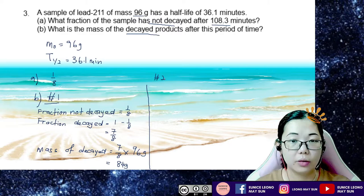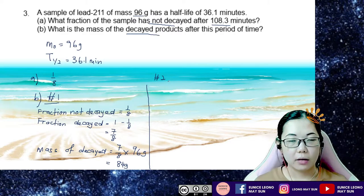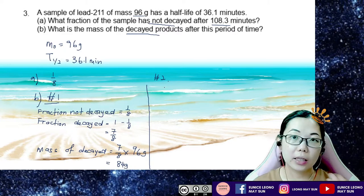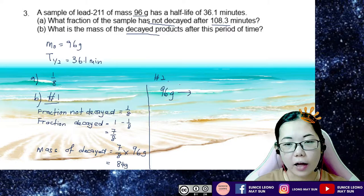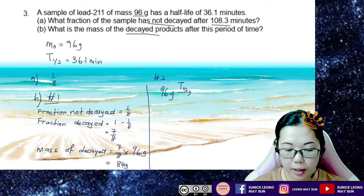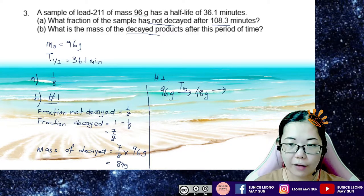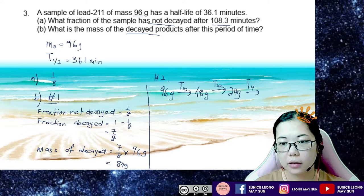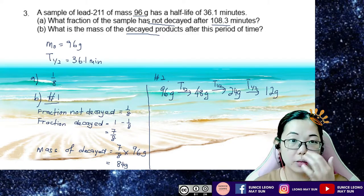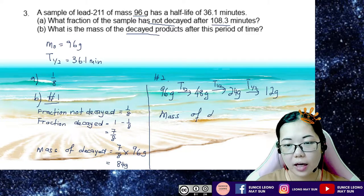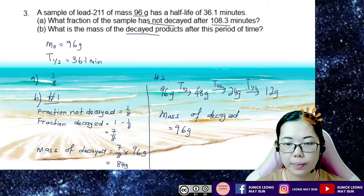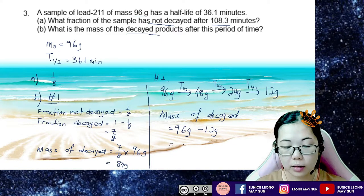For Method 2, since we know from part A that 3 half-lives have elapsed, I use the decay series. Starting with the initial mass of 96g: after one half-life it's 48g, after another half-life it's 24g, and after the third half-life it's 12g. So 12g is the mass that has not decayed, and the mass that has decayed is 96g minus 12g, which gives 84g.